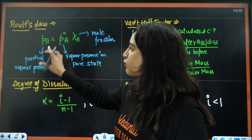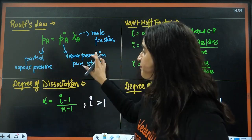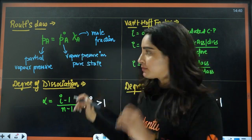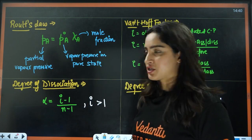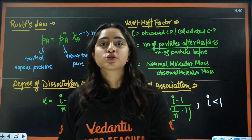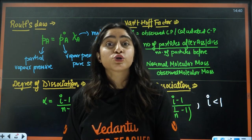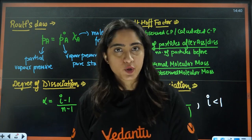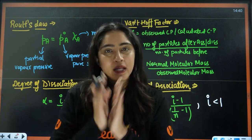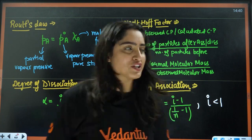Next we have Raoult's law. For Raoult's law, this is the partial vapor pressure, and this is the vapor pressure in pure state, denoted by 'not'. This is the mole fraction. If something obeys Raoult's law, that is called an ideal solution. If it does not obey Raoult's law, it is called a non-ideal solution. We have positive and negative deviations, and you need to remember all the examples of positive and negative deviation as well.